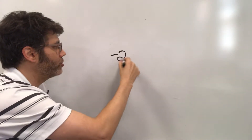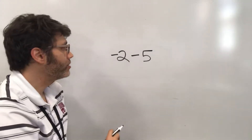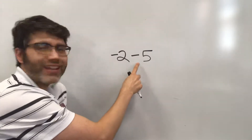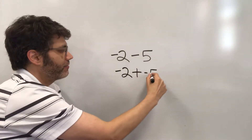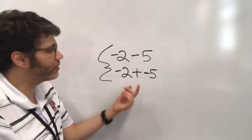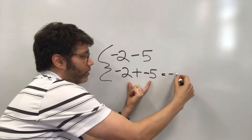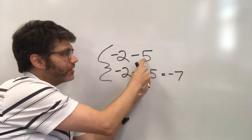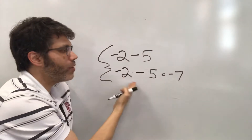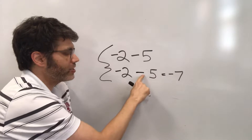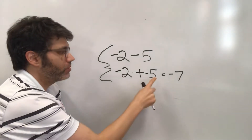How about subtraction? Let's say we have negative 2 minus 5. There's another way to think of this: whenever you're subtracting a positive, you can think of it as adding a negative. These two things mean the exact same thing. So negative 2 minus 5 is the same as negative 2 plus negative 5, which using our earlier method gives negative 7.